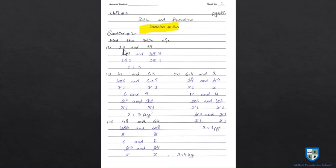इसमें ख्याल रखना है कि जब divide करेंगे तो एक ही number दोनों तरफ लेना है। 13 and 39: 13 divided by 13 and 39 divided by 13 — 13 एक ऐसा number है जो इन दोनों को divide कर सकता है। 1 by 1 is equal to 1, 3 by 1 is equal to 3 — हमारे पास ratio बनी: 1 is to 3.